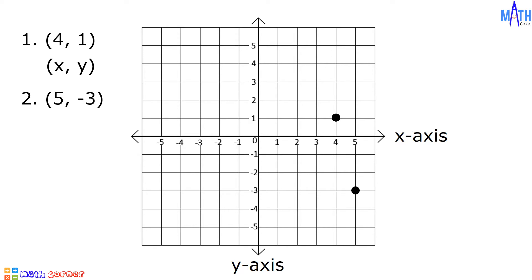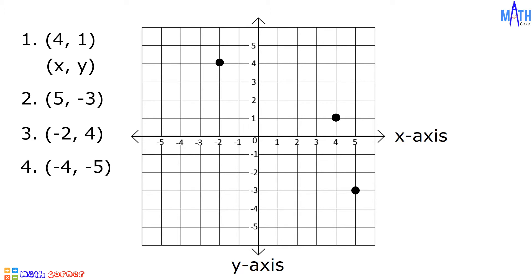Next point, we have (-2, 4). From the origin, we will move 2 units to the left and 4 units upward. And this is (-2, 4). Last point, (-4, -5). From the origin, we will move 4 units to the left and 5 units downward. And this is (-4, -5), which is located in the third quadrant.